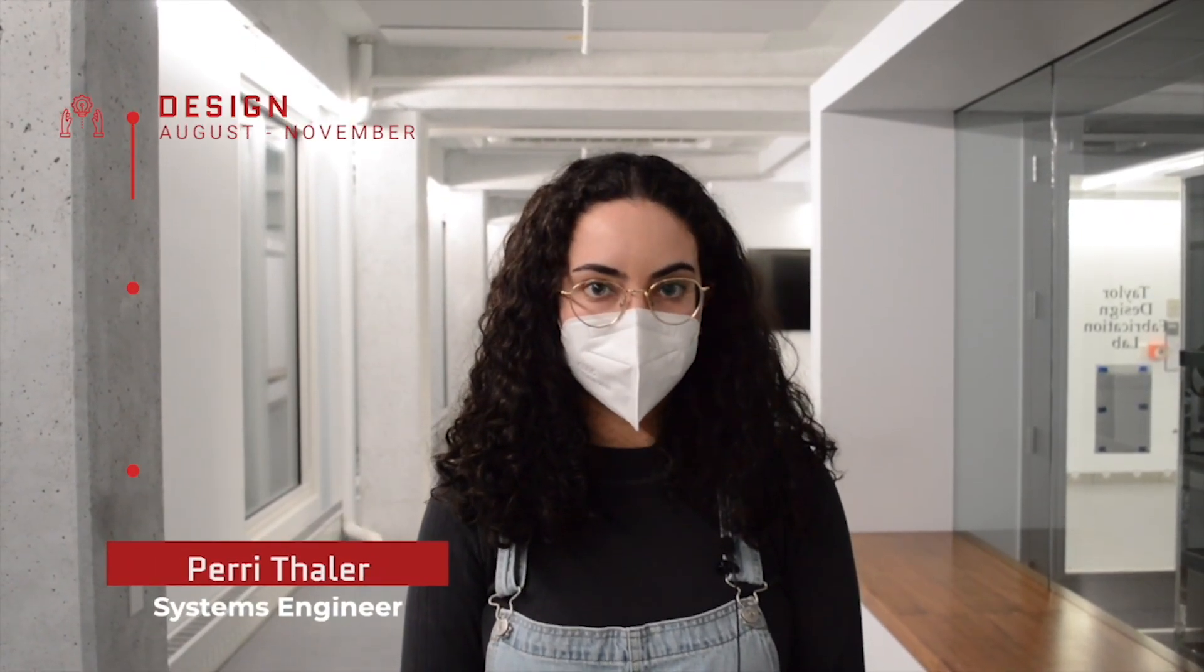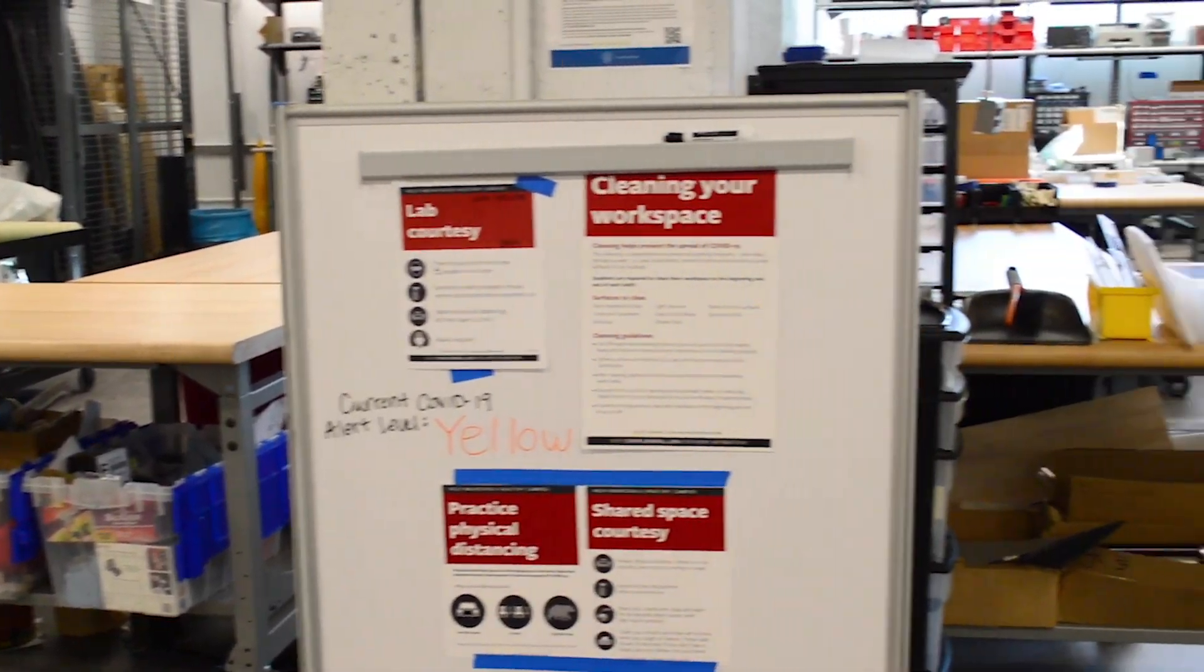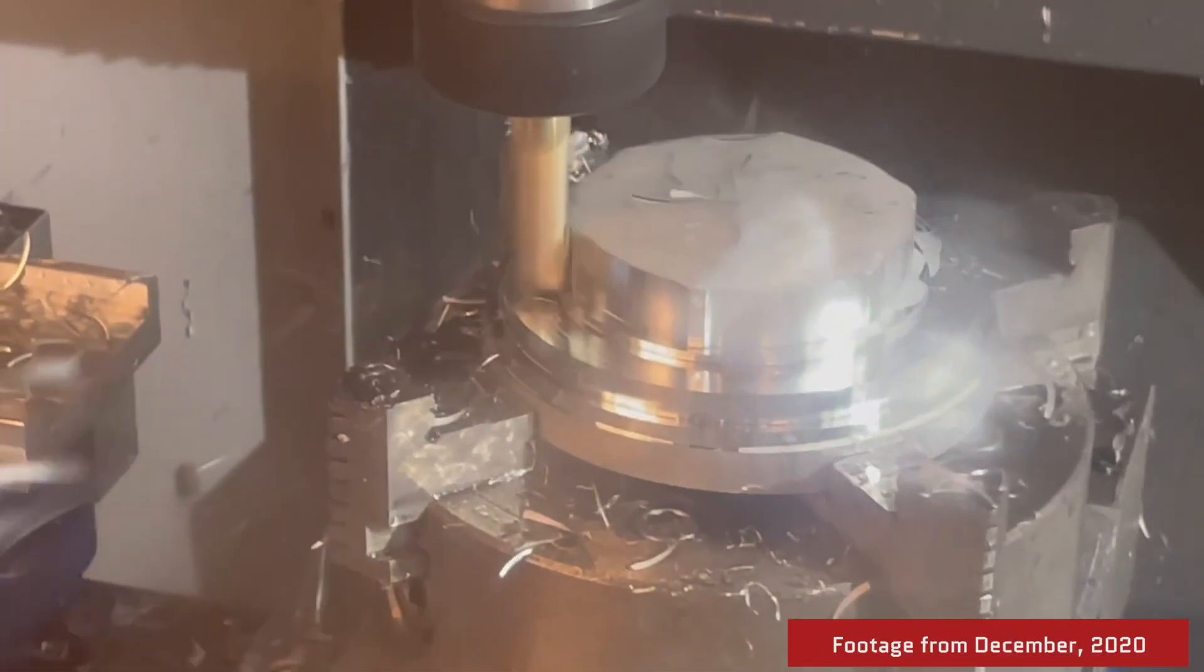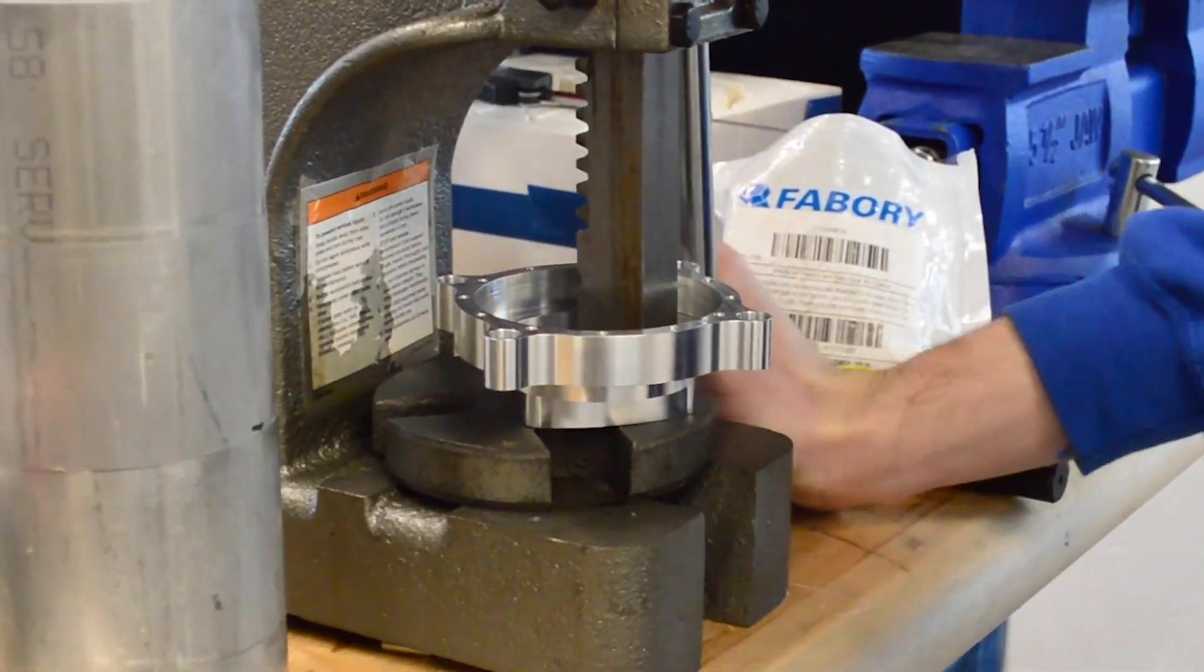The academic year is split into three development periods: a fall designing phase, a winter manufacturing phase, and a spring testing phase. Because of state and university rules regarding in-person work, we have had limited access to our lab space, machine shop, and rapid prototyping lab. As such, we are currently finishing up manufacturing, but we are on schedule to finish within the next two weeks.